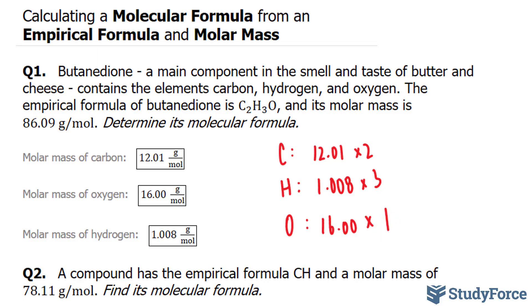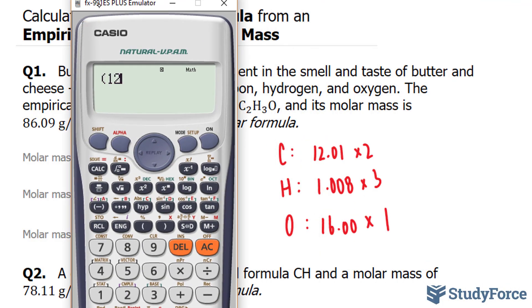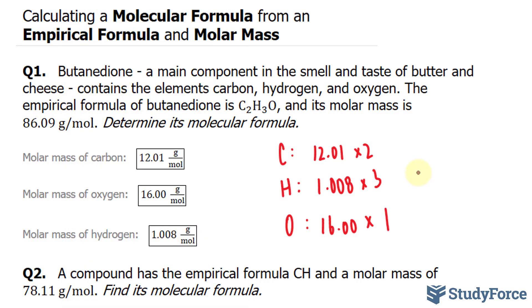Let's go ahead and use our calculator to compute this. Bracket 12.01 times 2, plus 1.008 times 3, plus 16.00 times 1, and we end up with 43.044 grams per mole.